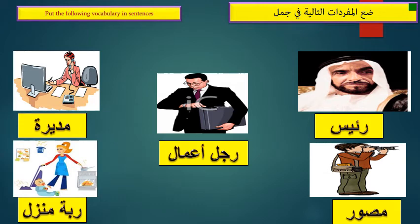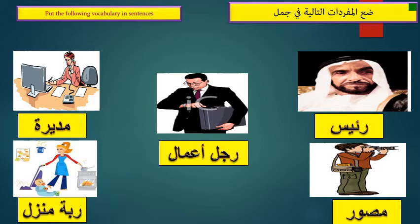Hello everybody. Our topic for today is about jobs and professions, so we need to know some job names and how we call these jobs in Arabic. First picture, we have the job of raiz — raiz means president. Next job: rajul a'mal — rajul a'mal means businessman. Next job is mudira — mudira means principal. Next job: musawweb — musawweb means photographer. Last job: rabbatumanzil — rabbatumanzil means housewife.